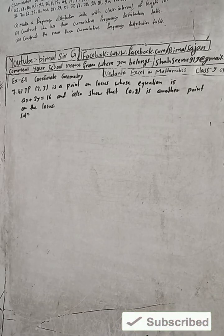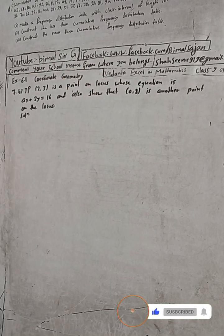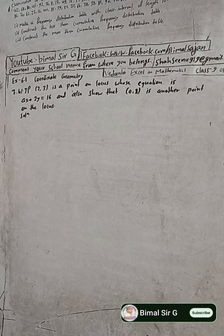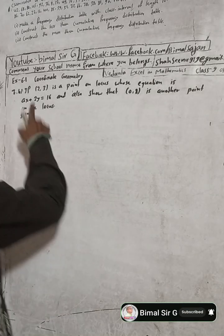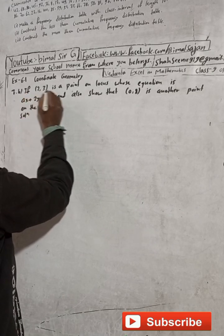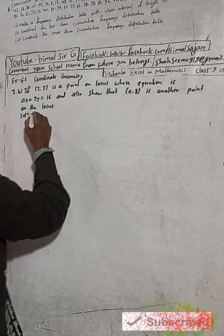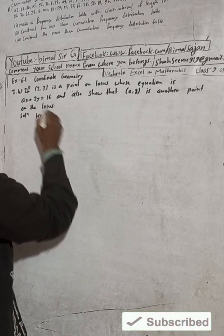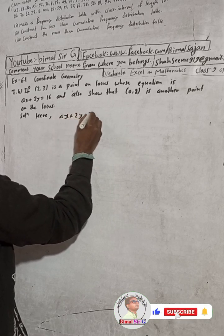This is question number 7b from exercise 6.1. Dear class 9 and 10 students, welcome back. Now, here if (2, 3) is a point on the locus whose equation is ax + 2y = 16. This is equation 1.